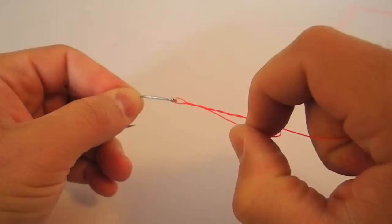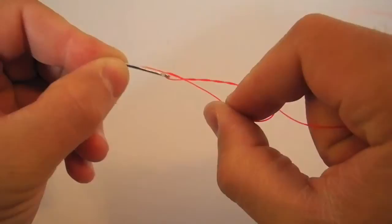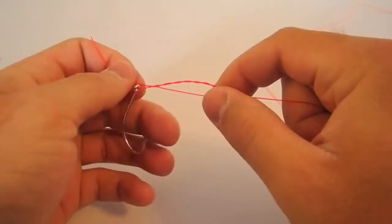Next, I'm going to take the tag end and put it through the loop that I made with the tippet. Right there, right up against the eye. I don't go through the eye, I just go through the loop that is down by the eye.